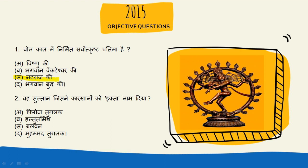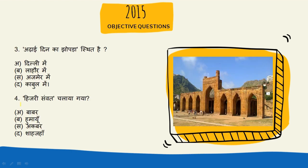Second question: Woh sultan jisne Iqta naam liya tha, to iska answer hai Iltutmish. Dekho — 'E' se Iqta aur iska jo answer hai wo bhi Iltutmish. Yaad karne ke liye: naqad vetan ke badle bhoomi ka ek hissa pradaan kiya jata tha, to iska answer hai Iltutmish.